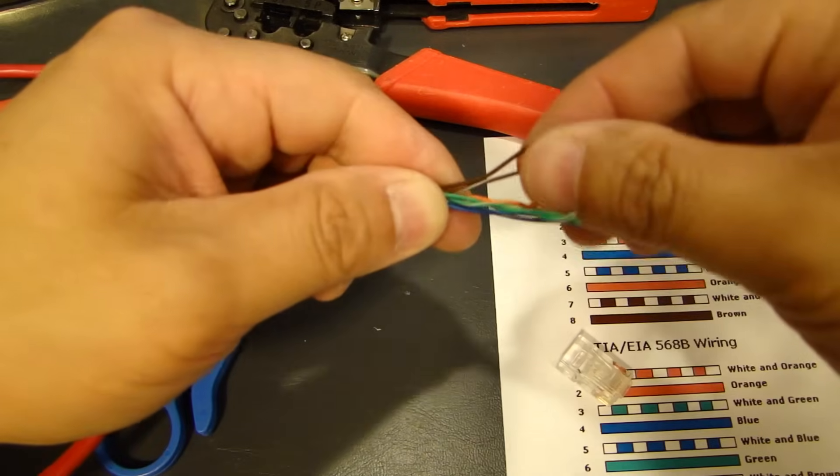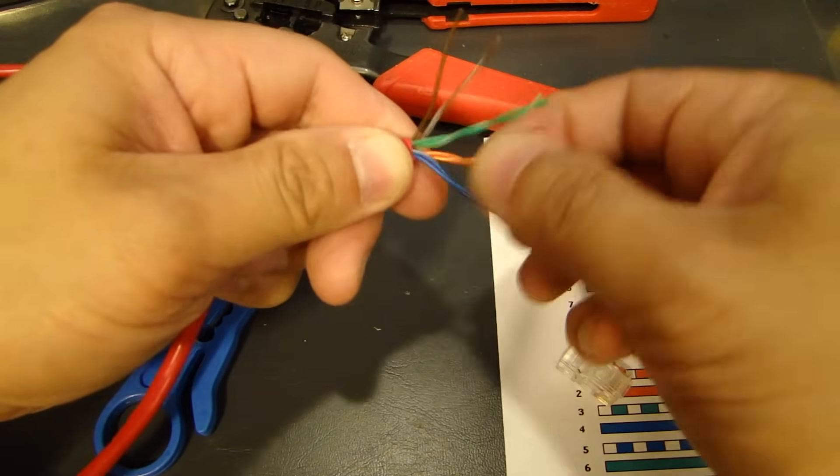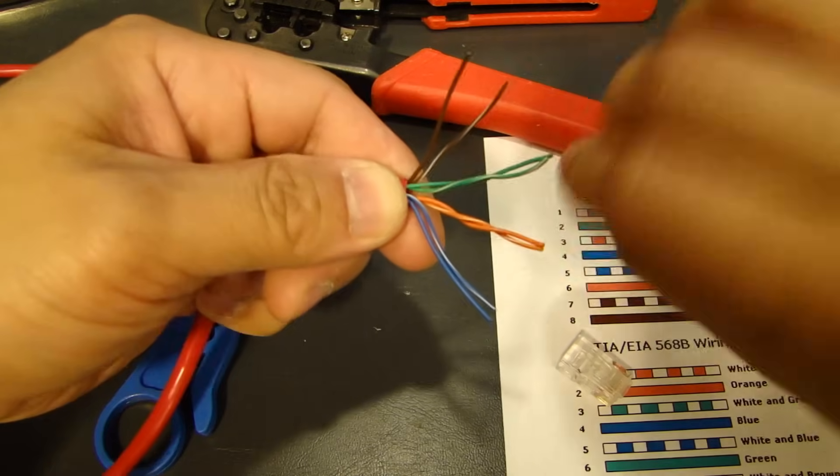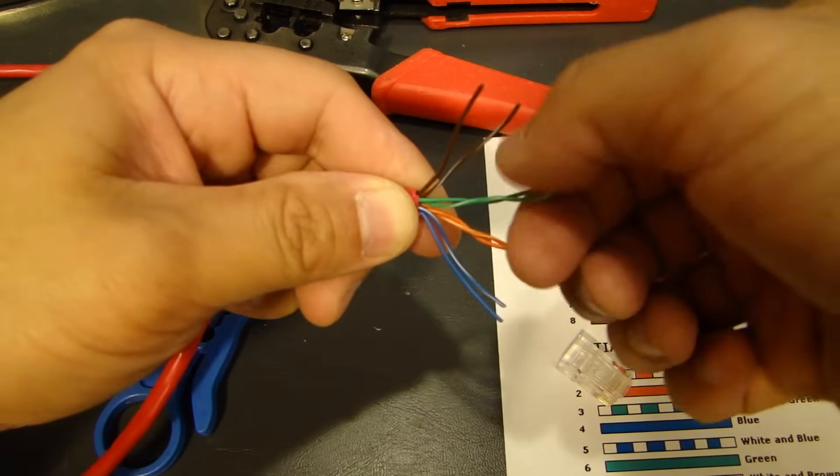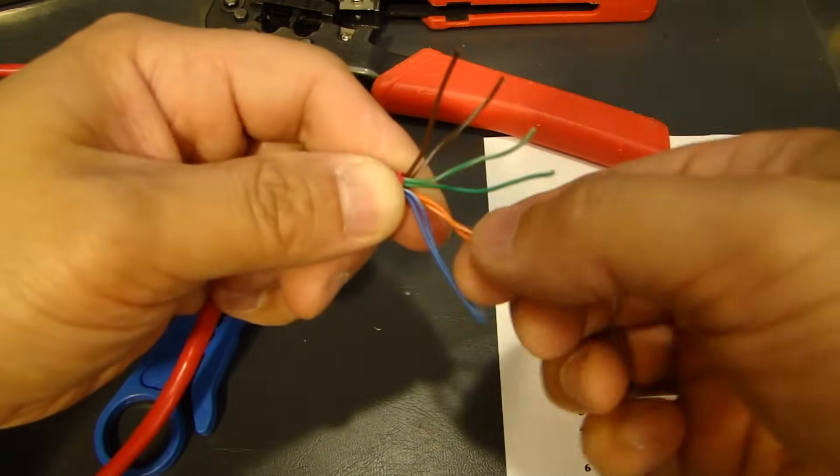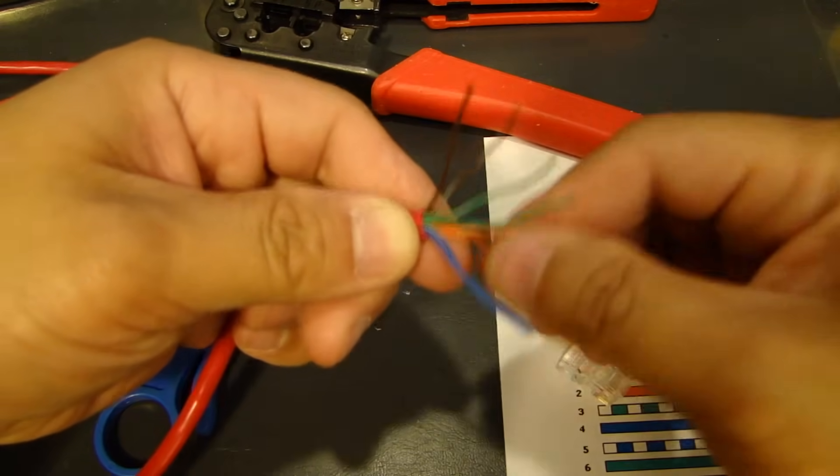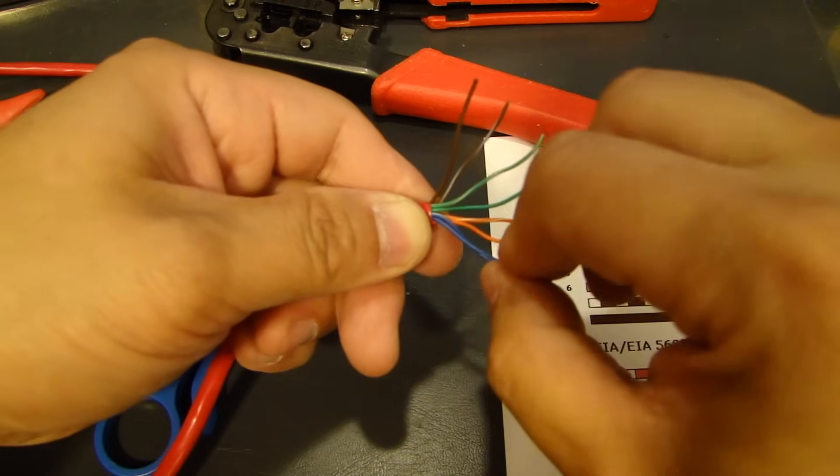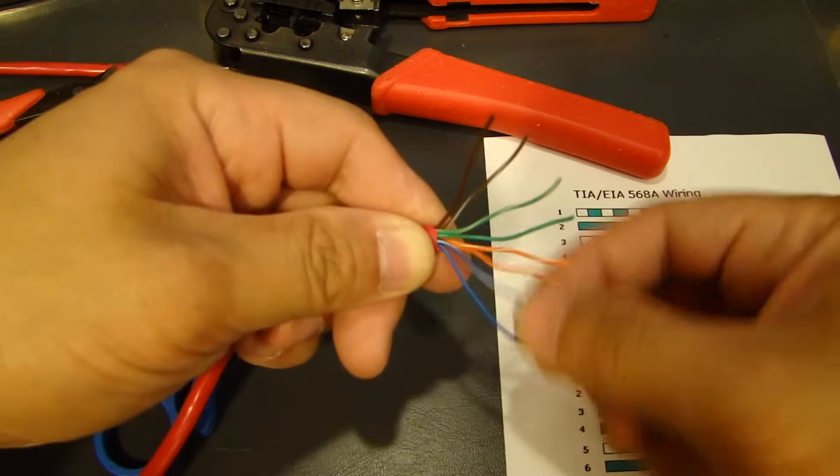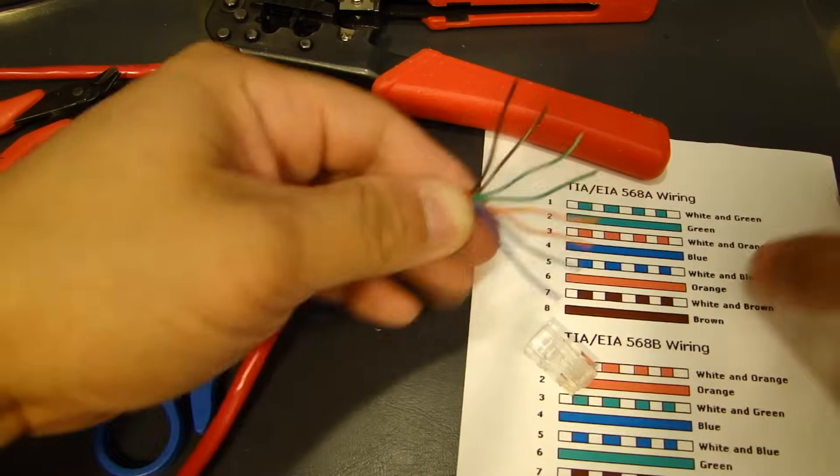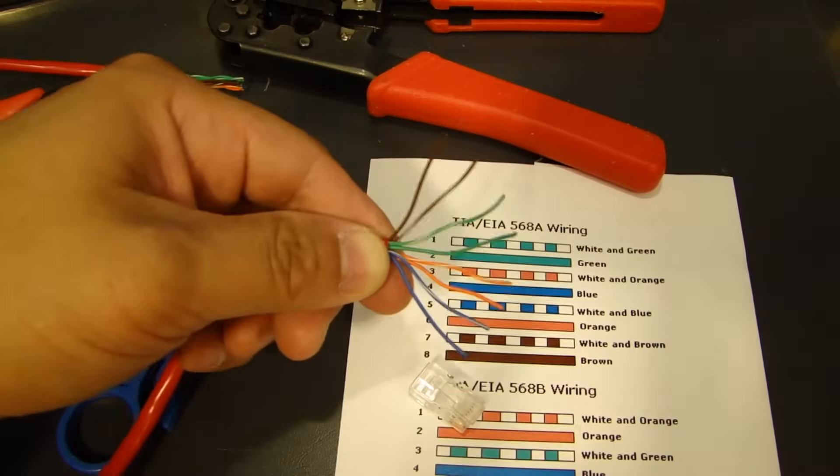So, the first thing I would do is I would take each pair and what you'll find is that they're twisted. These are unshielded twisted pair, as they call it. And I would go ahead and untwist these wires. So, these are nicely untwisted. I'll put it against this background so you can see it.